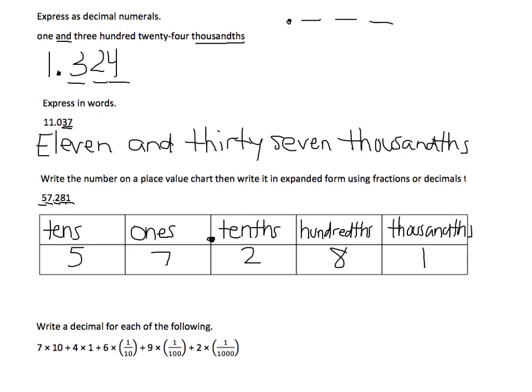So now I have my number on a place value chart. Now I need to write it in expanded form. This 5 doesn't actually stand for 5, it stands for 50, so I need to write 5 times 10. I'm then going to add that to my ones place. There's a 7 in the ones place, so it's 7 times 1 to get me to 7.